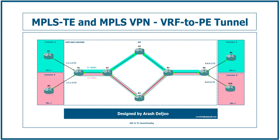In this video I'm going to talk about the relation between MPLS Traffic Engineering and MPLS Layer 3 VPN, specifically about the VRF-to-PE tunnel. This is a new concept. In the previous scenario you learned how to configure a traffic engineering tunnel between two PE routers and how to forward traffic of one customer into that tunnel to use better bandwidth of the service provider links. Here we have a similar scenario but with one important difference.